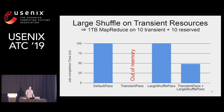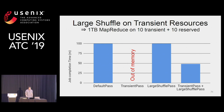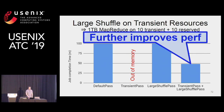For large shuffle on transient resources, we ran a one-terabyte map-reduce on 10 transient and 10 reserved resources. The X-axis is the pass used on Nemo. The default pass works similarly to Spark. Without the transient resource pass, default and large shuffle paths both suffer from recomputations, while the transient resource pass alone runs out of memory pushing large data to reserved resources. With both passes combined, we further improve performance over using just a single pass for this combined scenario.